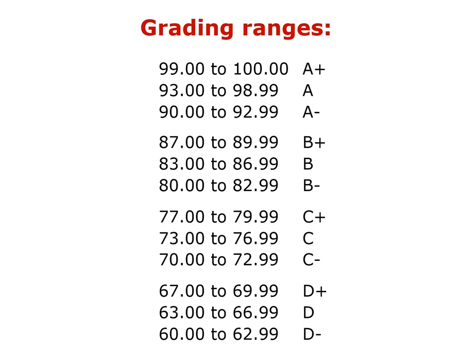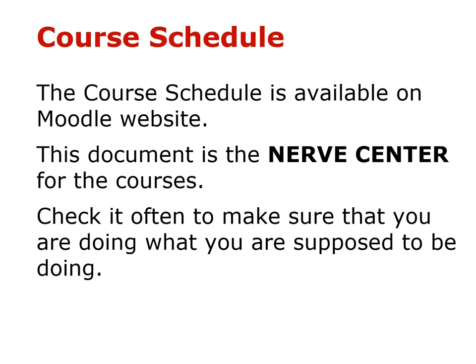The grading ranges are: 90.00–100 is the A range, 80.00–89.99 is the B range, and so forth. The passing grade of D- starts at 60. The course schedule is available on the Moodle website. This document is the nerve center for the course — check it often to make sure that you are doing what you are supposed to be doing.